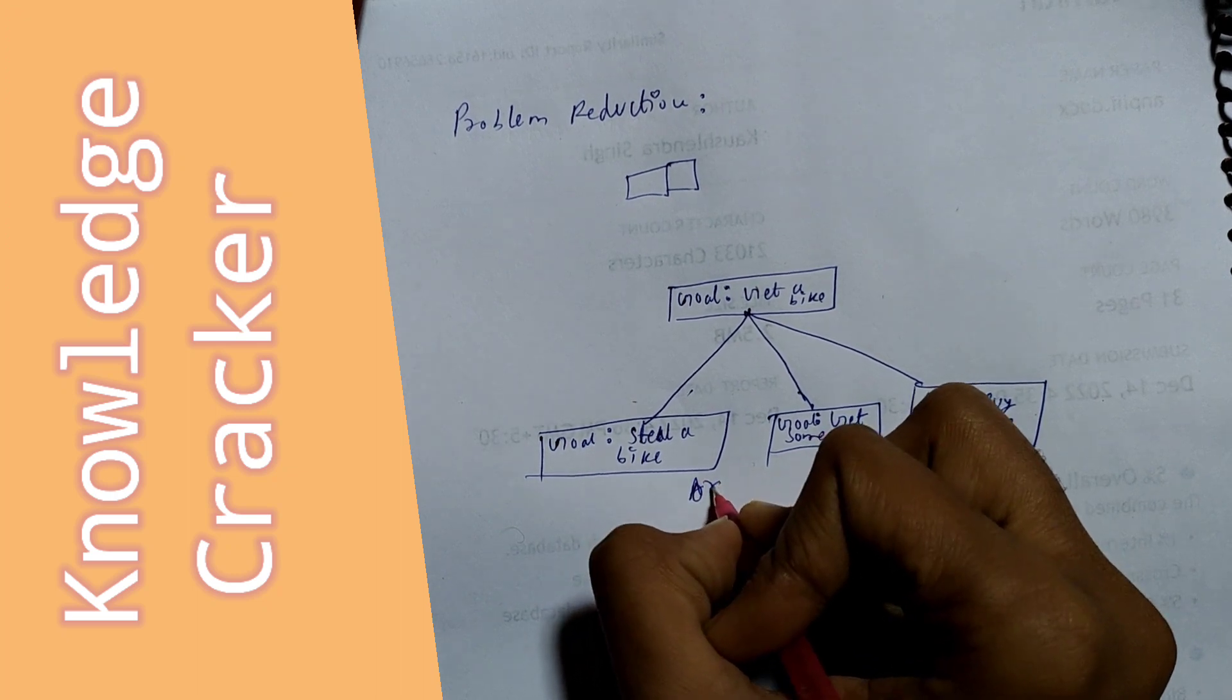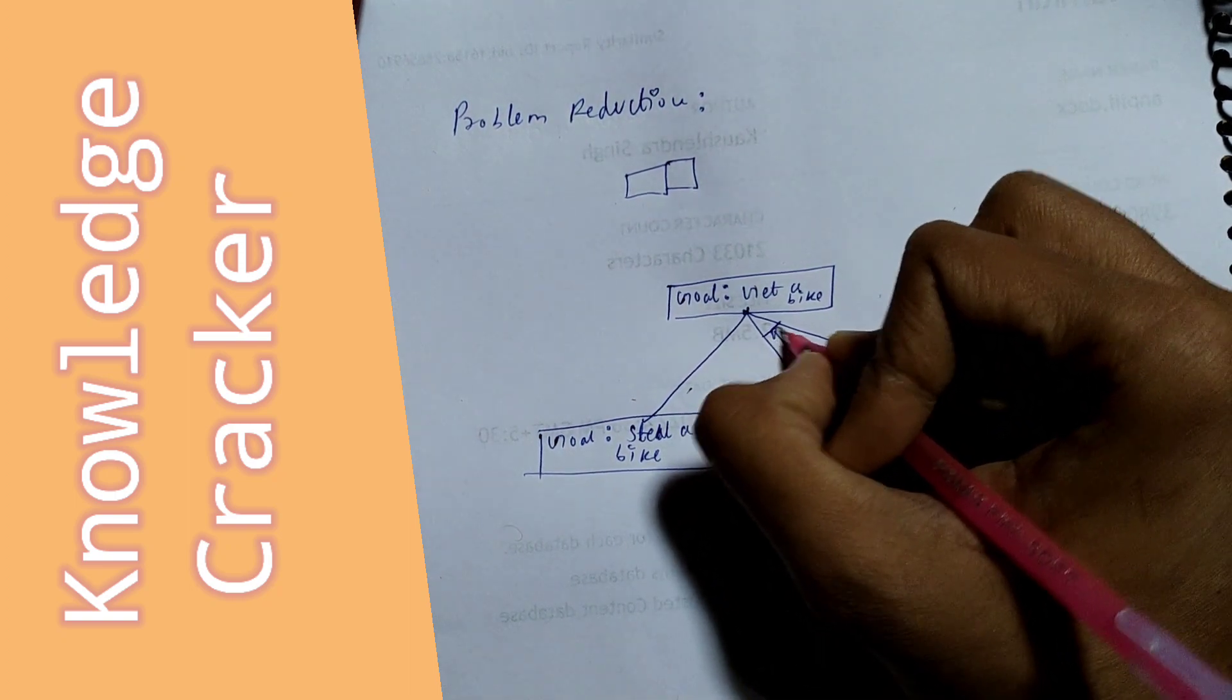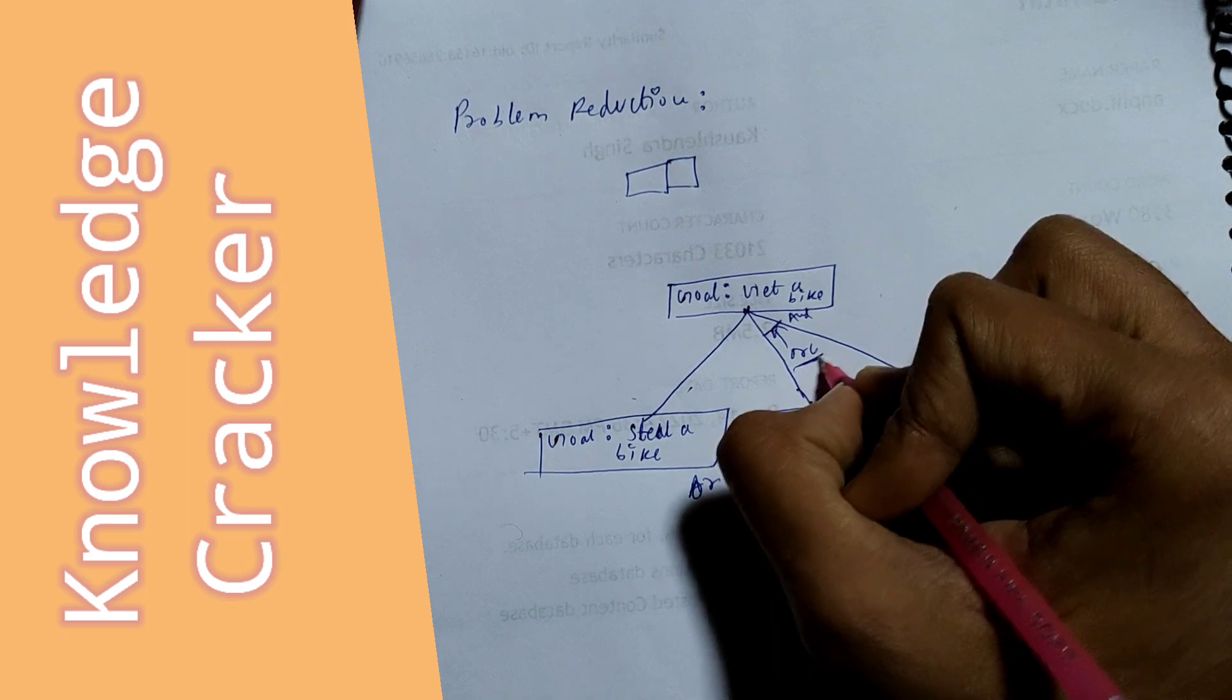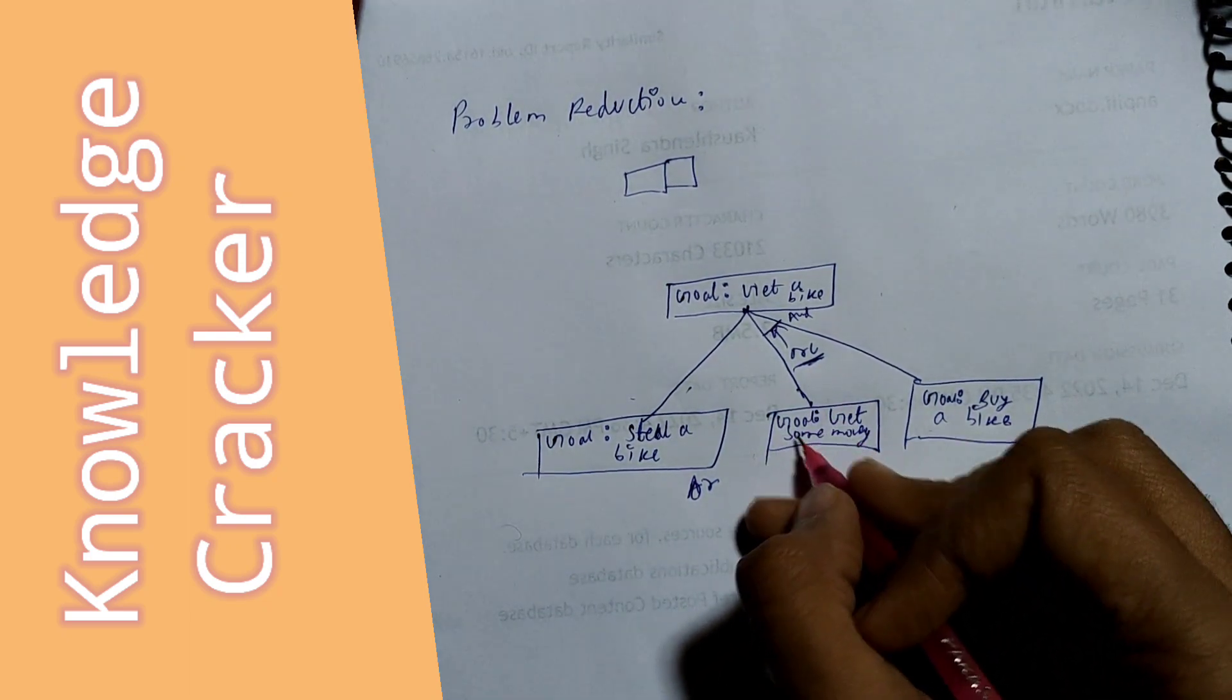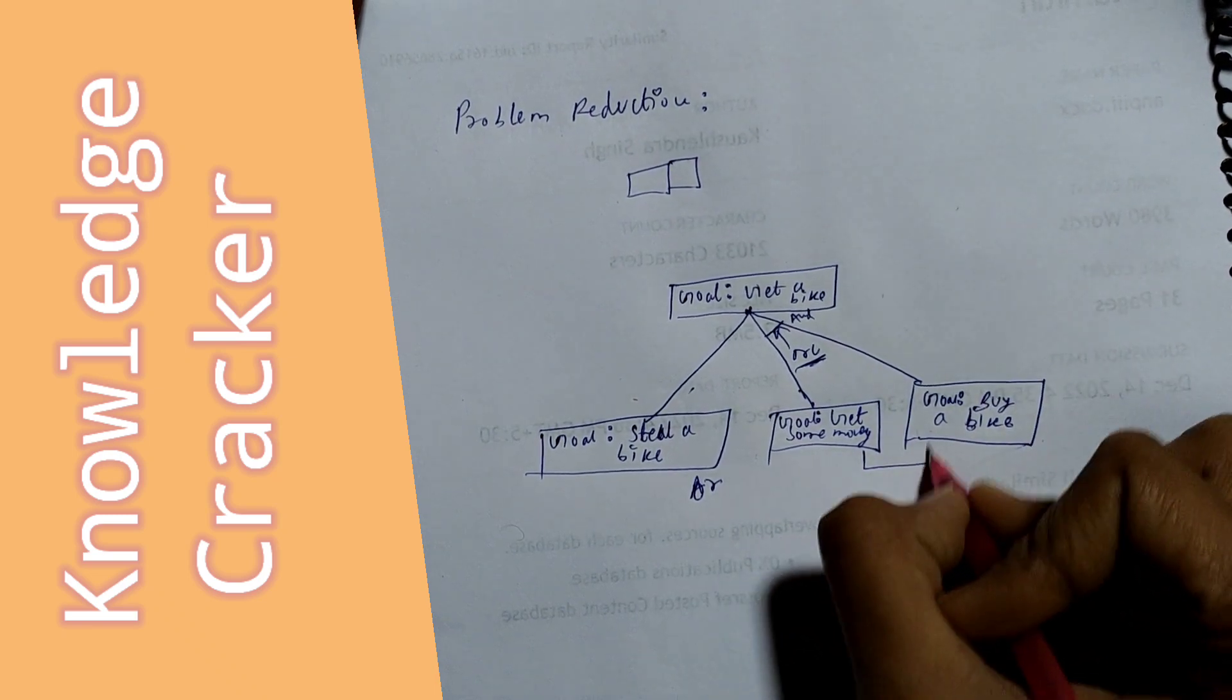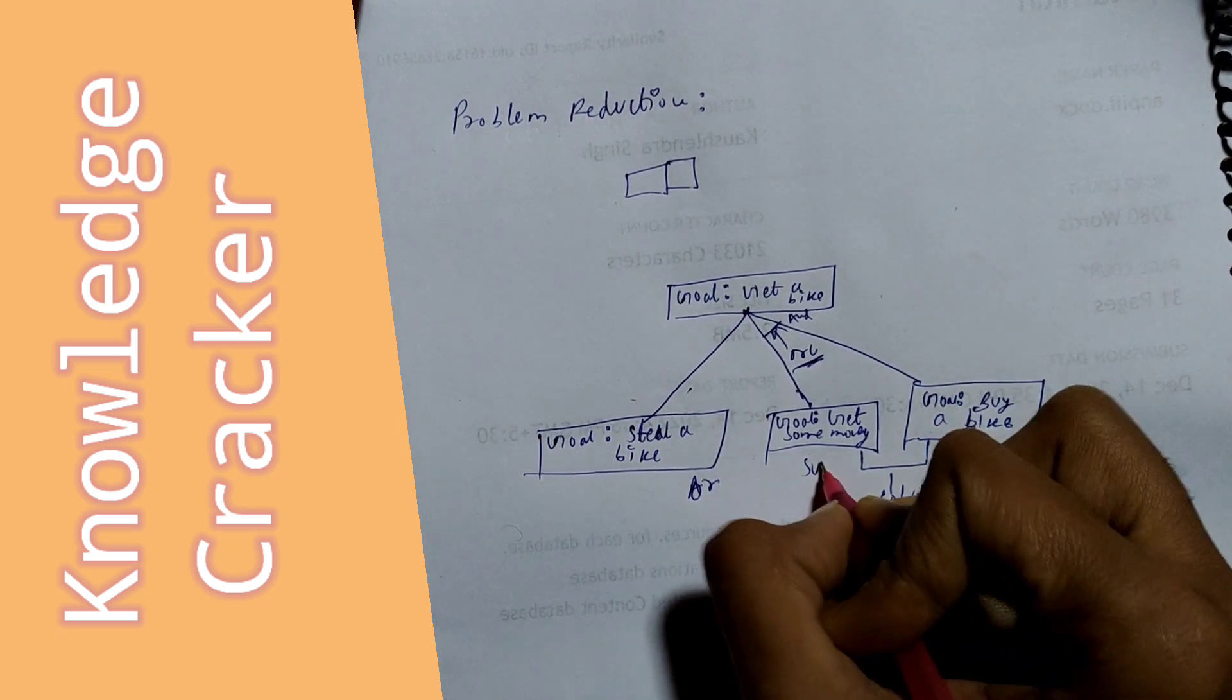These are the AND. This means AND creates the arc. For example, we get some money and buy a bike. This makes an output solution from these sub-problems.